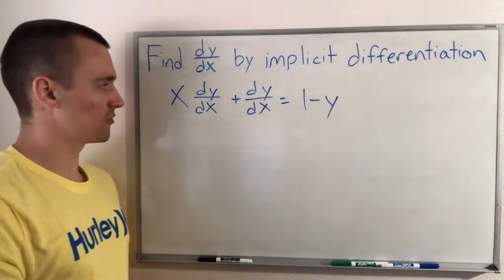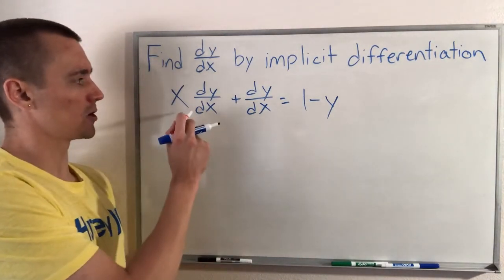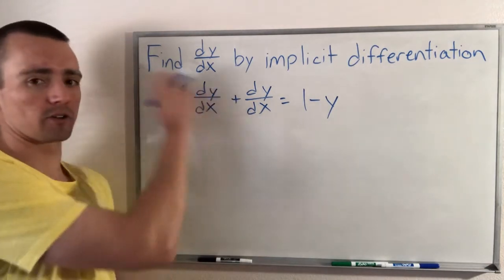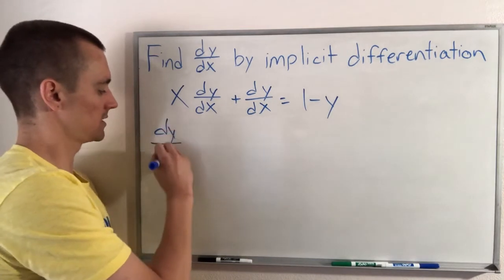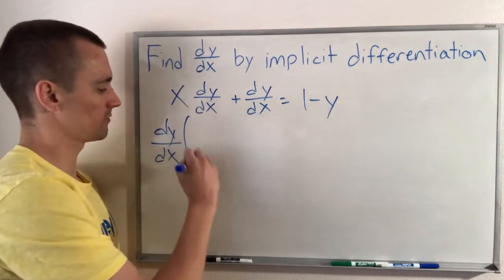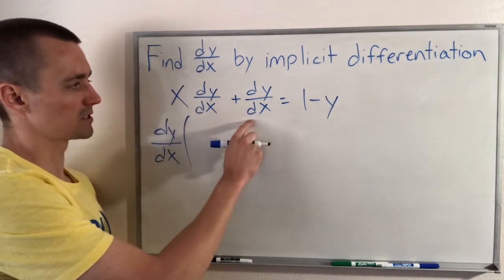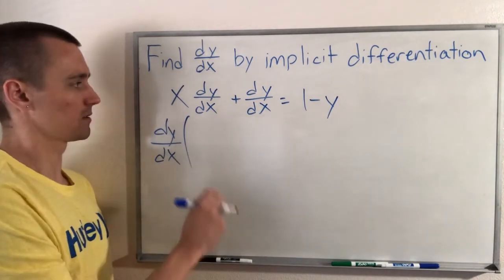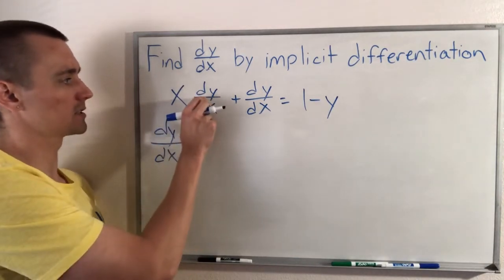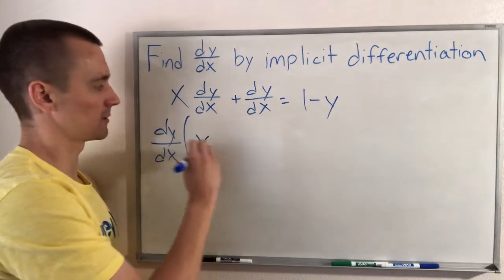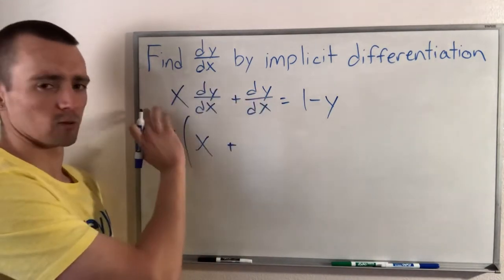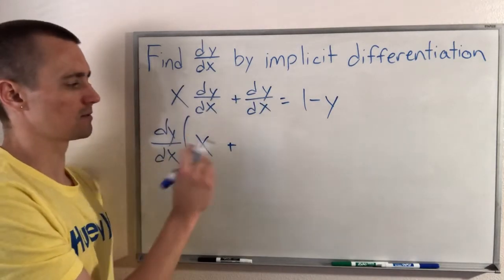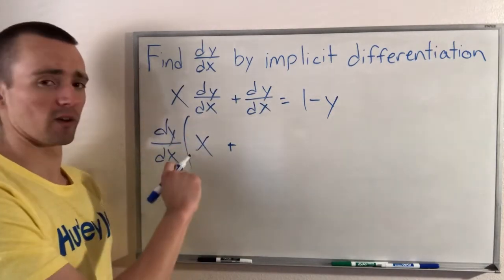So now that we've done that, since every term over here on the left side of our equation has a dy/dx in it, we can factor the dy/dx out. So if we pull dy/dx out of each of these terms, what would we be left with? x times dy/dx. If we pull out the dy/dx, we're just going to be left with x. And then over here, if we pull out the dy/dx, we aren't going to be left with anything, but we can't just put 0.